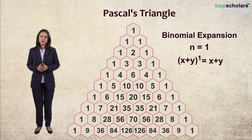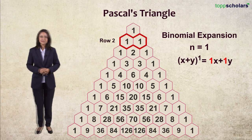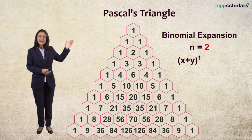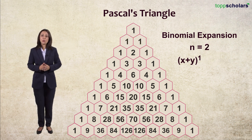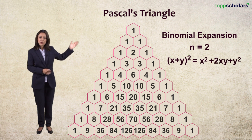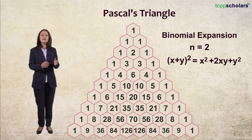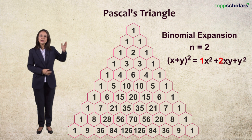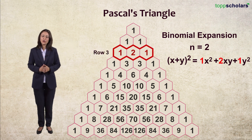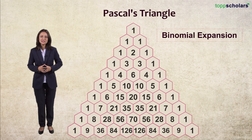For n equal to 2, (x + y)² is equal to x² + 2xy + y², where we have coefficients 1, 2, and 1. And this is the third row of the triangle. So Pascal's Triangle helps us with binomial expansion.